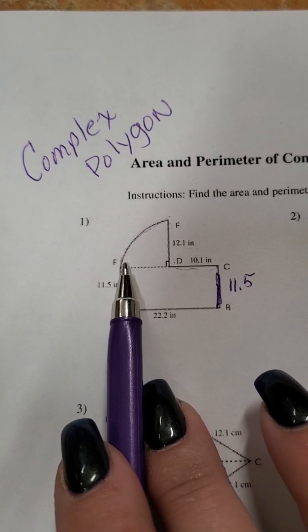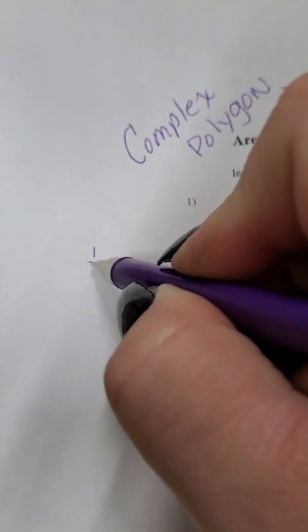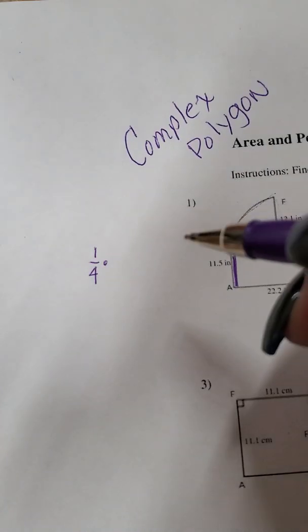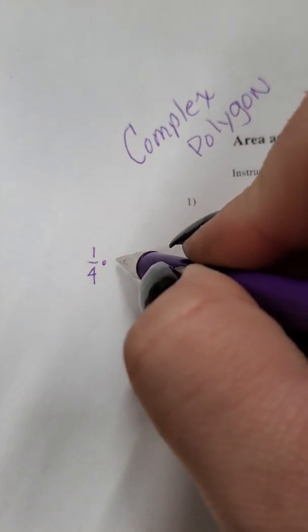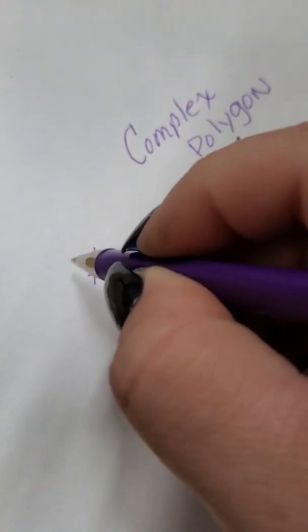All right now we got to find this section which is a quarter of a circle over here. A quarter of the circumference and if you remember let's go off to the side, a quarter of the circumference. So one-fourth, of means times, and circumference is 2 times pi times the radius right.